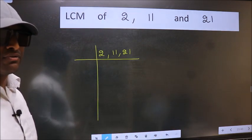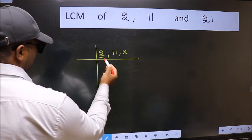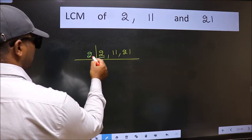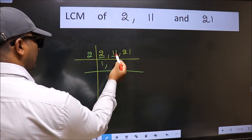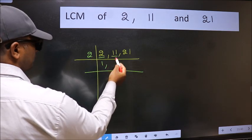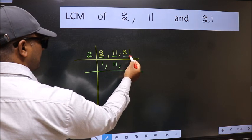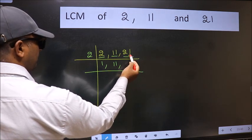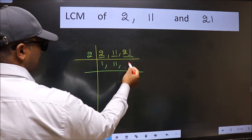Now we should focus on the first number which is 2 here. 2 is a prime number so 2 goes into 2. The other number 11 not divisible by 2 so we write it down as it is. The other number 21, last digit 1, not even, so this number is not divisible by 2 so we write it down as it is.